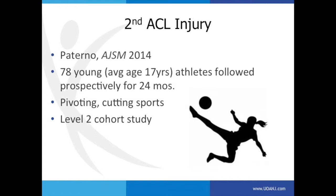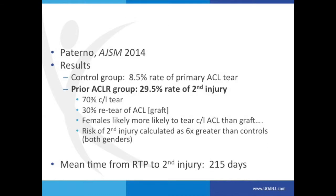I think this is one of the better studies out there. This is Paterno, AJSM, last year, out of Children's Hospital in Cincinnati. They had 78 young patients, average age 17, with 24 months of prospective follow-up. All of these were young people who participated in pivoting and cutting sports — a level two study. Their results were pretty concerning. The control group had an 8.5% primary ACL tear. Even more concerning was the fact that the ACL group had an almost 30% rate of a second injury — 70% tore the contralateral knee, 30% re-tore their operated-on knee. Females were more likely to tear the contralateral knee than the graft. The risk of second injury was calculated at six times greater than controls.